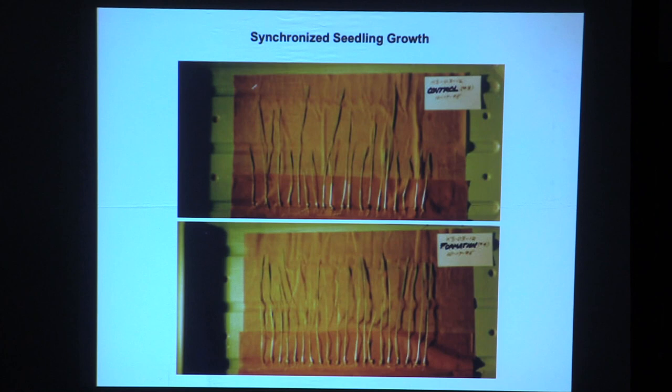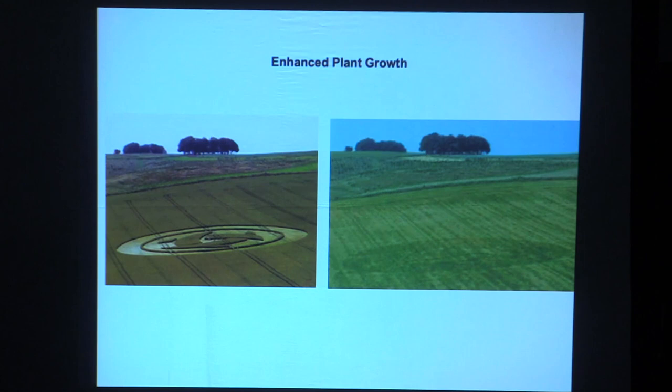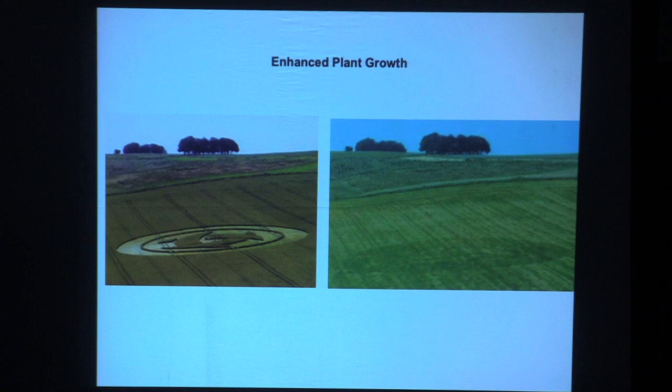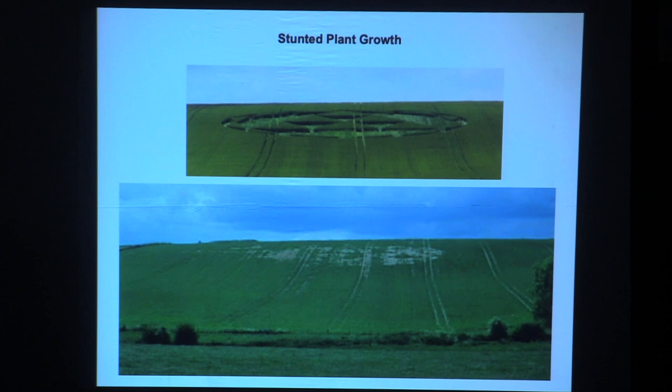This is just as astonishing — the synchronization of seedlings. Everyone knows that if you have a handful of seeds, some are better than others and they grow at different rates. Not so with seeds subjected to the energy of the crop formation — they were all synchronized. The next year, when the farmer planted where the crop formation had been, he had some really healthy plants. Although another farmer experienced the opposite. I can't tell you why, but there's an effect in both cases to the soils. Clearly it was not about someone walking around with planks of wood flattening plants — there was some kind of energy that created this change.